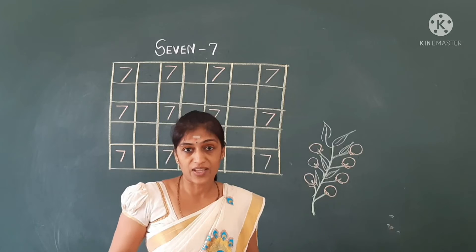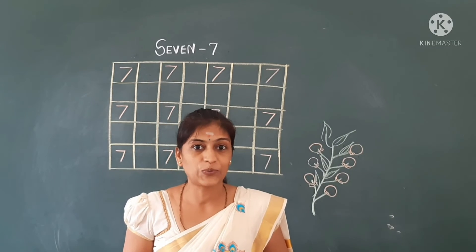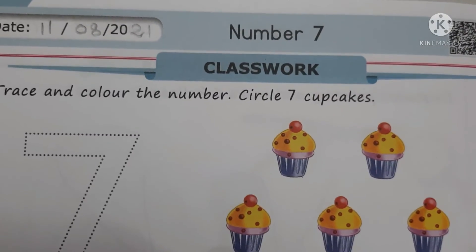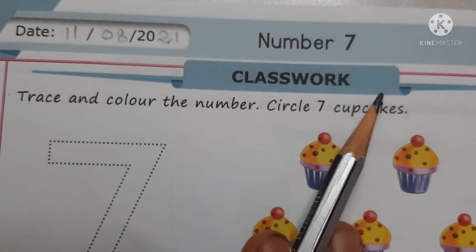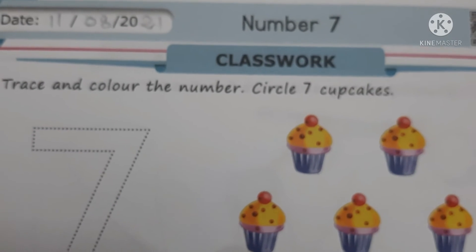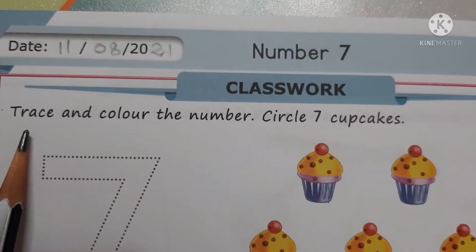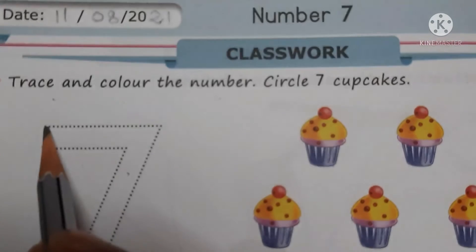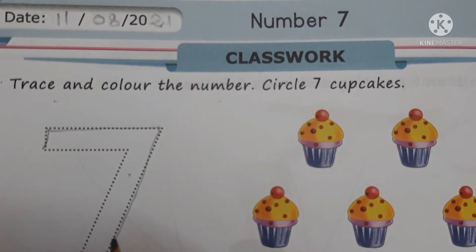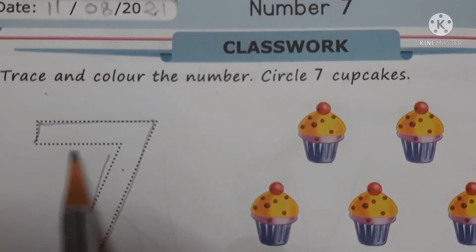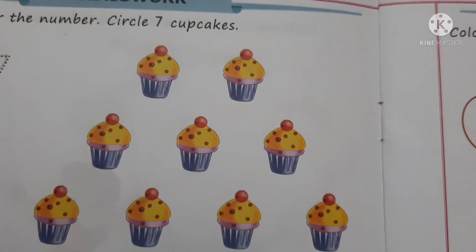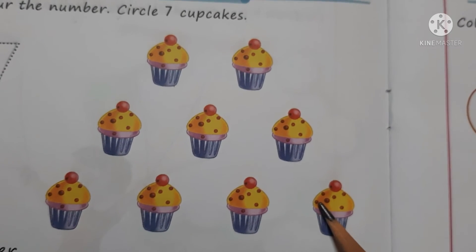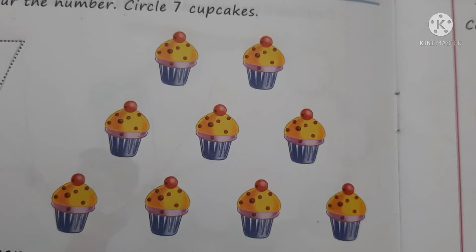Children, practice at home number 7. Now we will write in the textbook. Hello children, Jai Ho. This is the mathematics writing book and today's number is 7. We will enjoy with number 7. Trace and color the number 7. And color the 7 cakes. So many colorful, tasty, yummy cupcakes are there. You have to count and circle only 7 cakes.